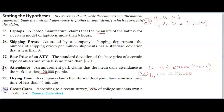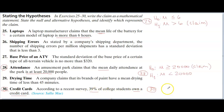Let's do problem number 30. It says that according to a recent survey, 39% of college students own a credit card. In this problem we're working with percentages, so the claim is about proportion P. The claim is that 39% of college students own a credit card. I translate that as: P — because that's a percentage — 'own' is a verb meaning equal, so P = 0.39. Because that was my original claim, I put in parentheses the word 'claim.'